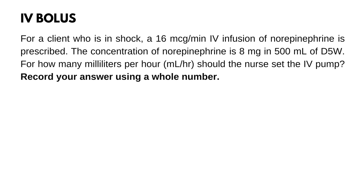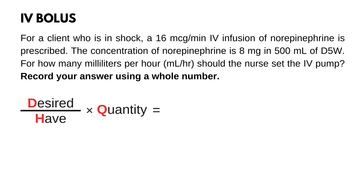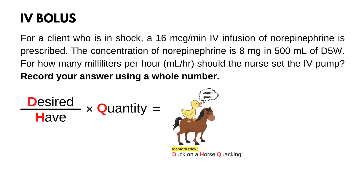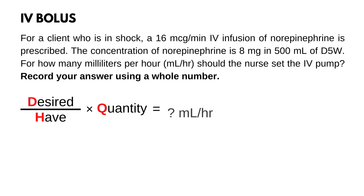For a client who is in shock, a 16 mcg per minute IV infusion of norepinephrine is prescribed. The concentration of norepinephrine is 8 mg in 500 mL of D5W. For how many mL per hour should the nurse set the IV pump? Record your answer using a whole number. The first step is to set up our formula: desired over half times quantity. Use the memory trick — duck on a horse quacking. Now add the unit answer, mL per hour, because the question is asking how many mL per hour.